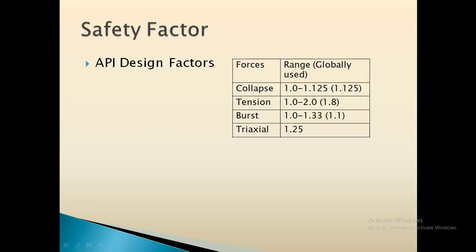The API has designed safety factors for the above design properties. For collapse pressure, the design factor should be between 1.0 to 1.125, with a standard value of 1.125. For tension it is between 1 to 2, with a standard value of 1.8. For burst it is 1.1 to 1.33, with a standard value of 1.1. For triaxial it is 1.25.